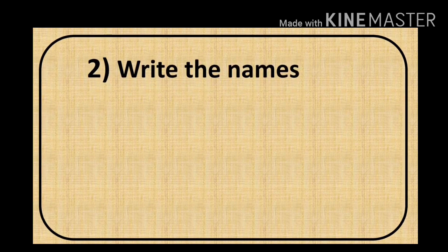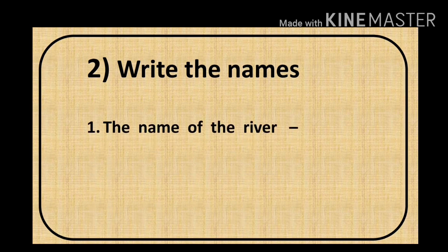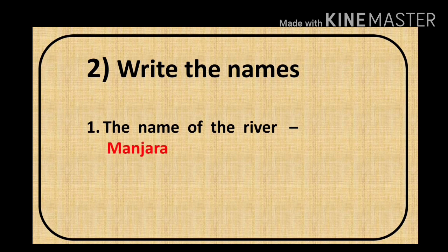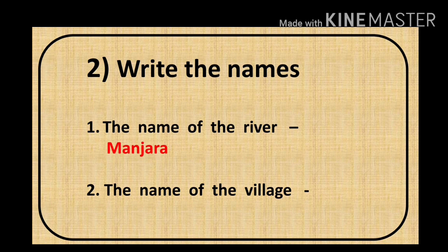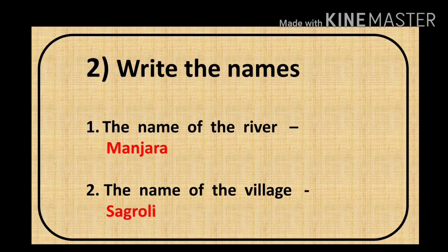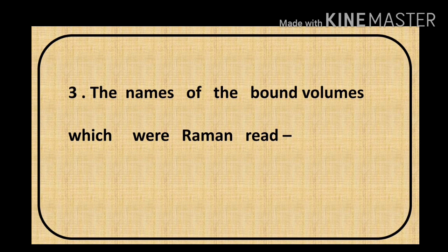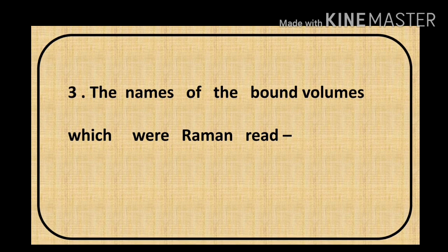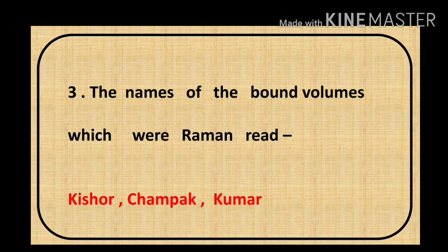Second, write the names. First, the name of the river — the answer is Manjra. Second, the name of the village — Sagroli. Third, the names of the bound volumes which Raman read: Kishore, Champak, Kumar.